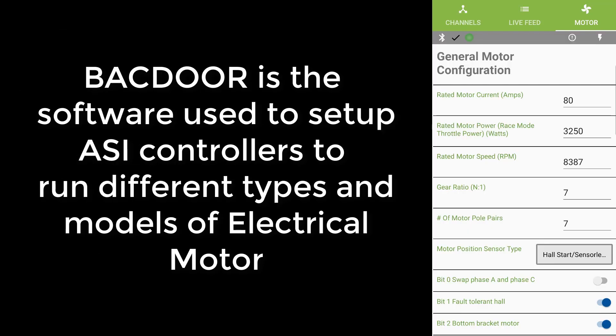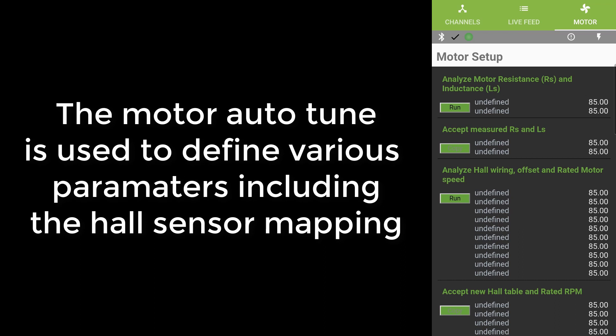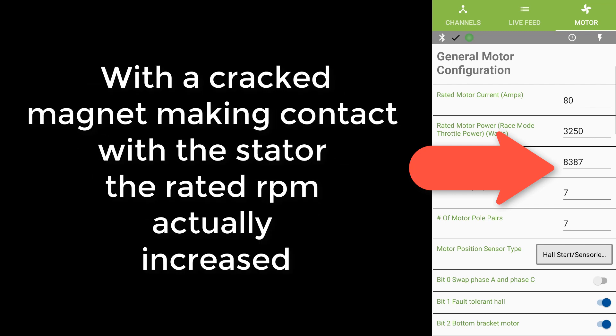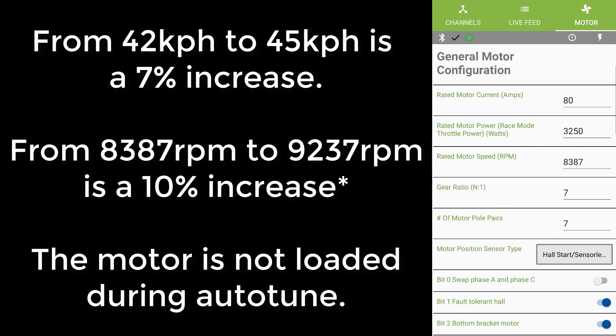Some other sort of anecdotal evidence to corroborate it comes from Backdoor itself, and I do apologize because I didn't take any screenshots, but I ran what's called the motor auto-tune. This feature of the ASI controller performs rotational testing on the motor you have connected and gives you optimal parameter settings for your Hall sensor mapping, etc. And before this issue, the rated RPM in Backdoor was 8,373. But running it with this issue, it came out at just under 9,300. So this RPM gain that I felt on the road is being replicated within Backdoor. And this RPM increase is reflective of the roughly 3 km/h boost in speed as well.